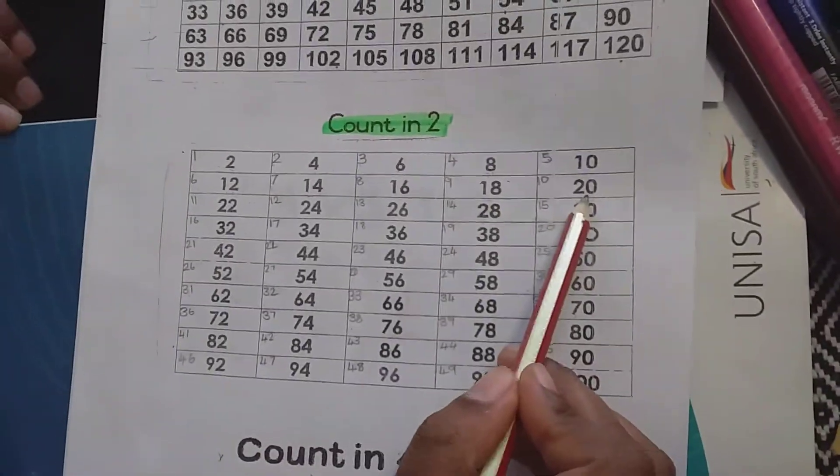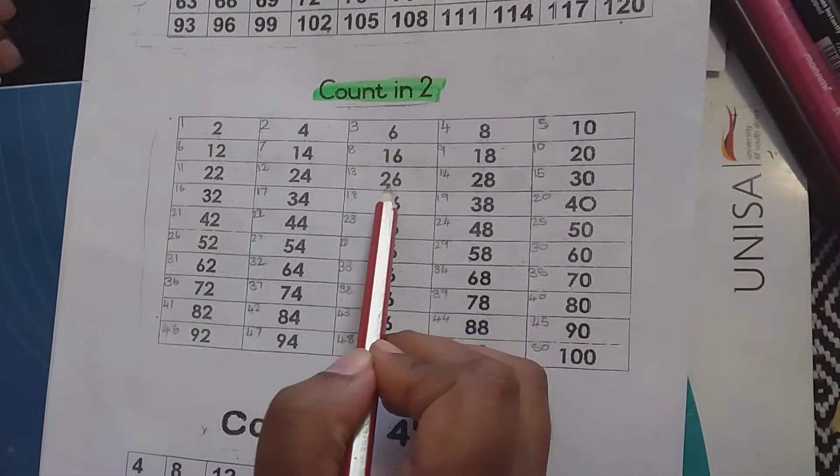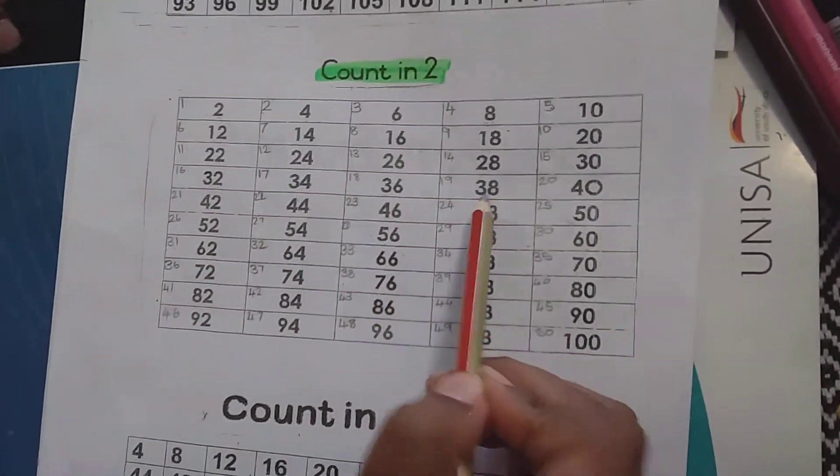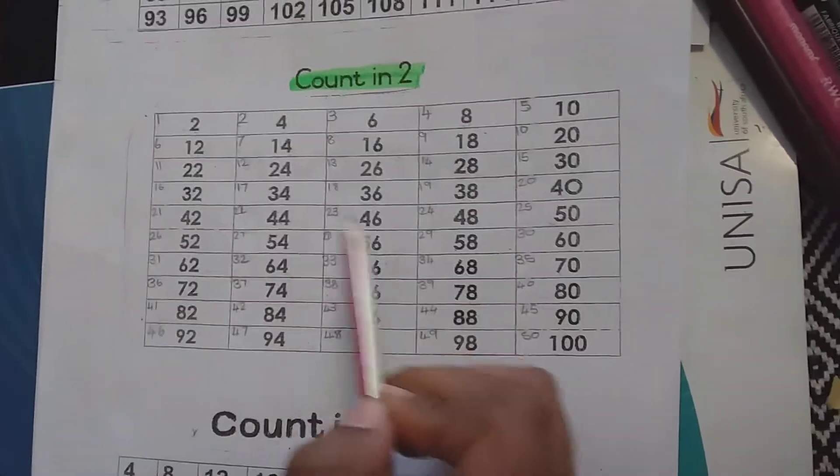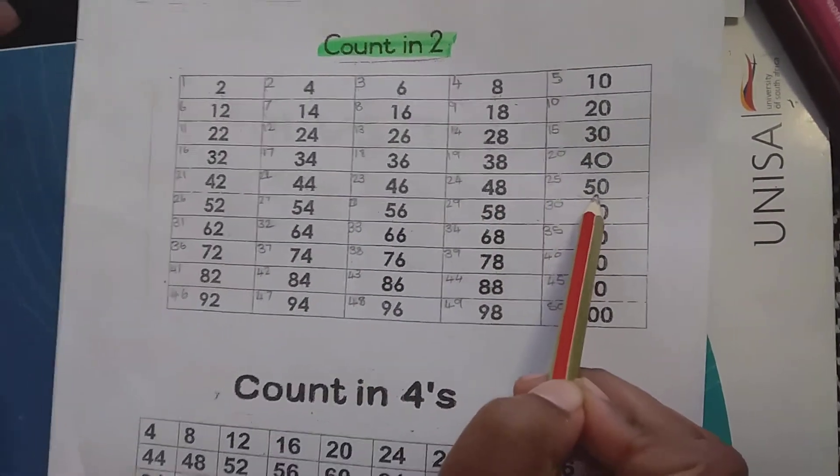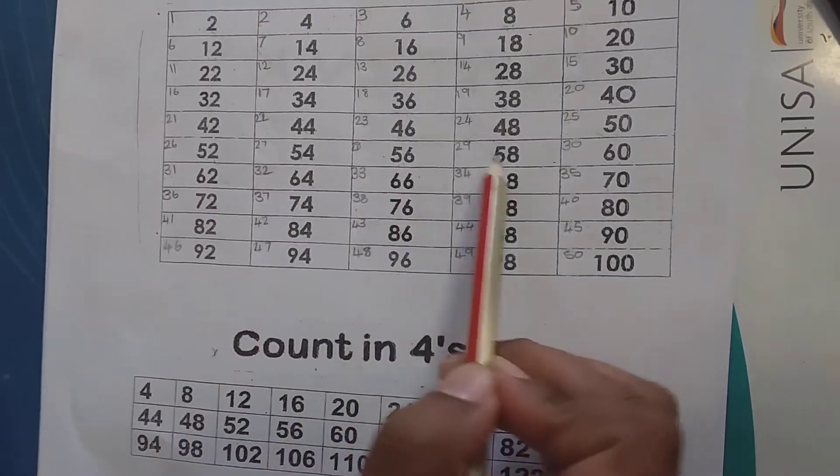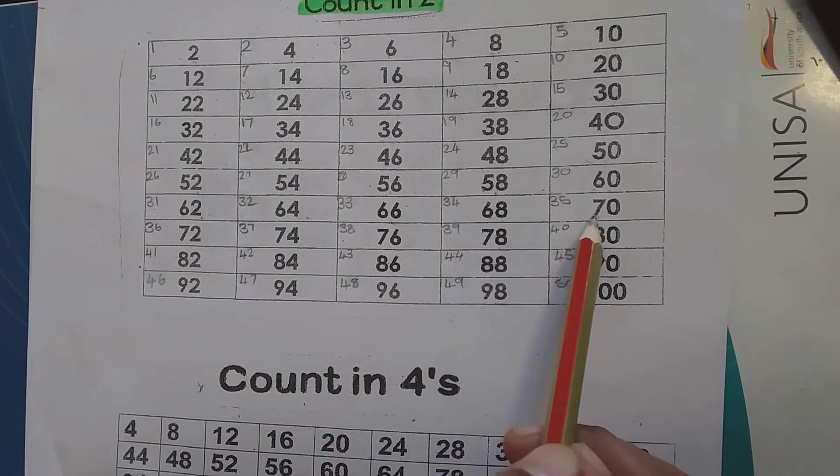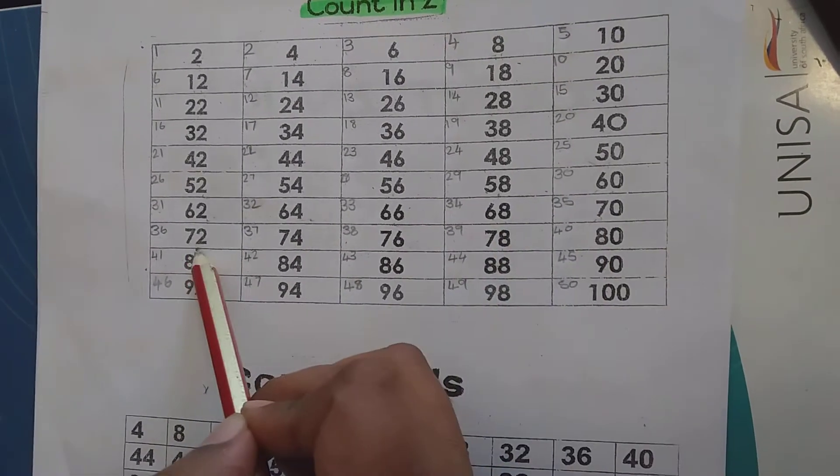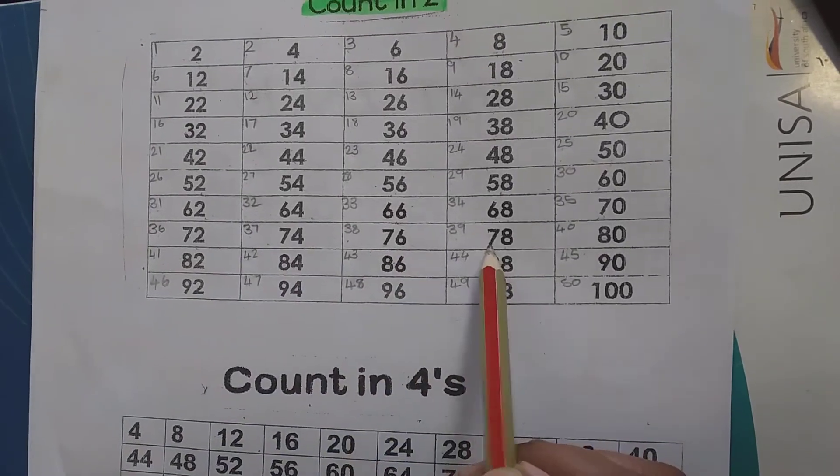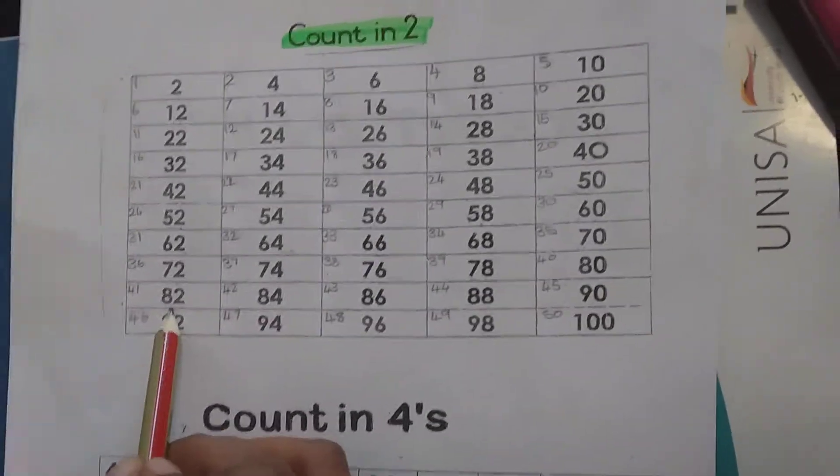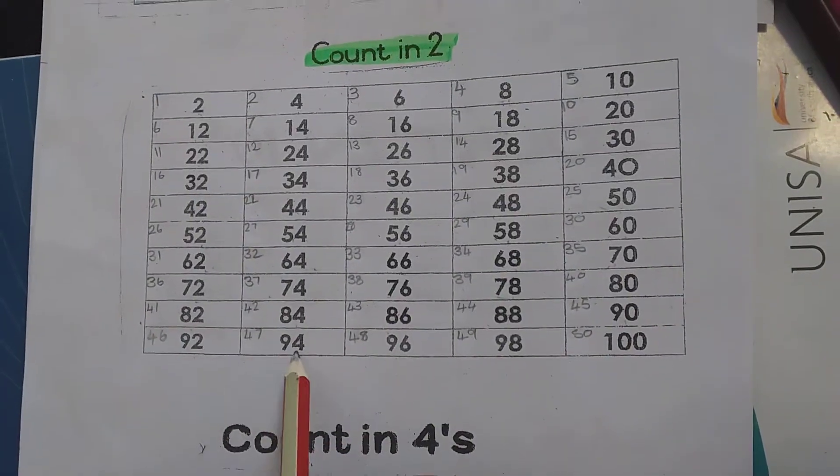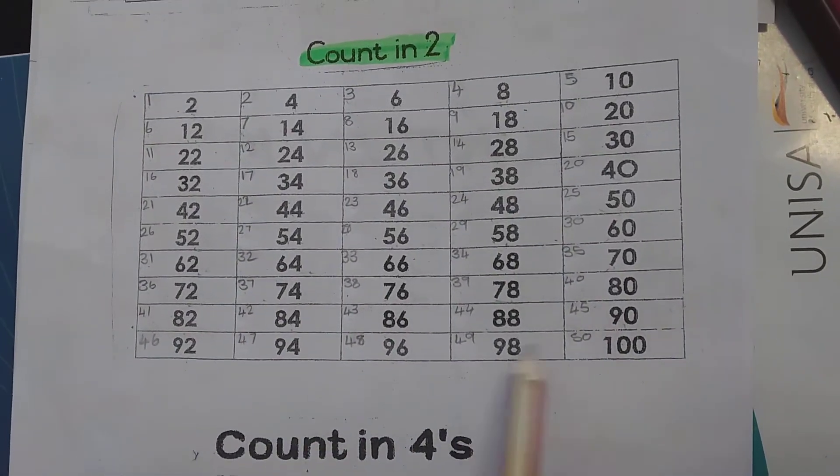16, 18, 20, 22, 24, 26, 28, 30, 32, 34, 36, 38, 40, 42, 44, 46, 48, 50, 52, 54, 56, 58, 60, 62, 64, 66, 68, 70, 72, 74, 76, 78, 80, 82, 84, 86, 88, 90, 92, 94, 96, 98, 100.